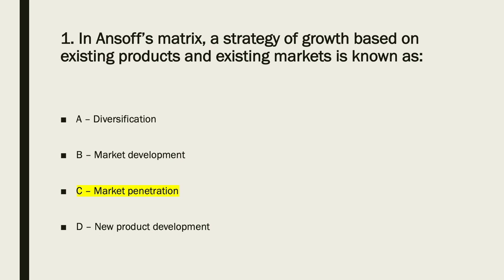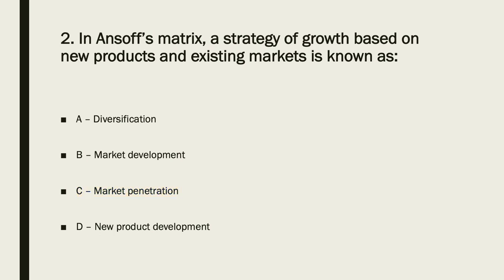Let's move on to question two — testing Ansoff's matrix again. It's a strategy of growth based on new products but existing markets. That would suggest the answer is D: new product development.